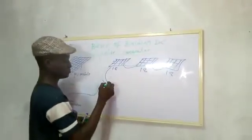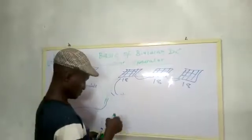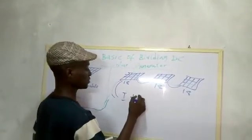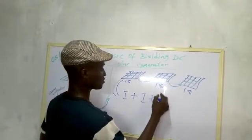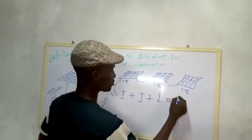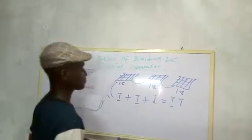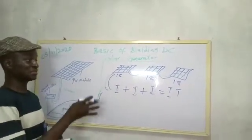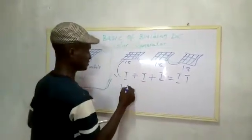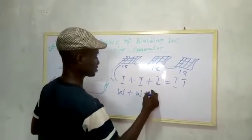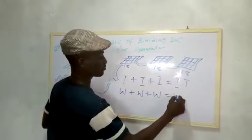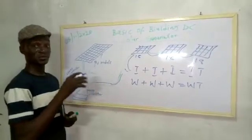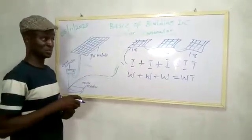This will give you current plus current plus current, which will be equal to current total. In this connection, the current will sum up, the voltage remains the same. The wattage increases: wattage plus wattage plus wattage, which will be equal to wattage total. So that is the difference between a series and parallel connection on PV modules.